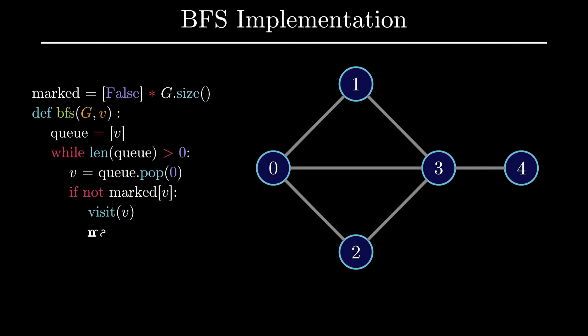If it hasn't been visited yet, we will visit the vertex, mark the vertex, and then iterate through all the neighbors and add any unmarked neighbors to the queue.